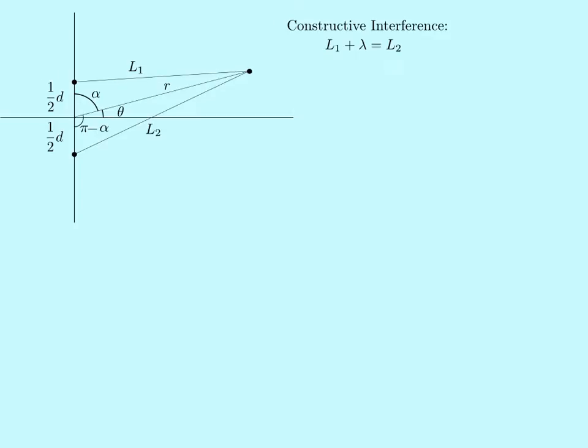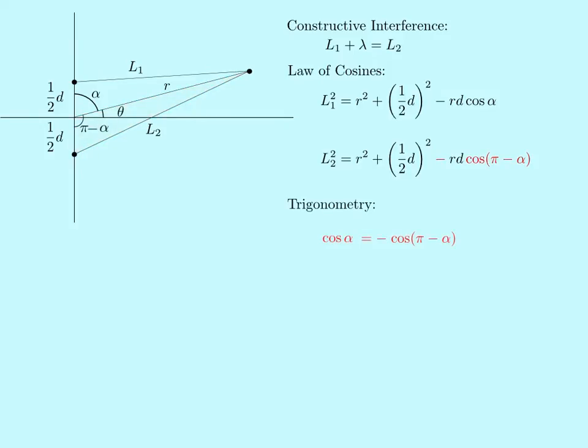The law of cosines as applied to the blue triangle relates L1 to R, the radial distance from the origin to the point on the hyperbola, as well as the slit separation d and the angle alpha. We can derive a similar relationship for L2 using the red triangle, except that the relevant angle is the supplement of alpha. We can simplify the algebra using trigonometry.